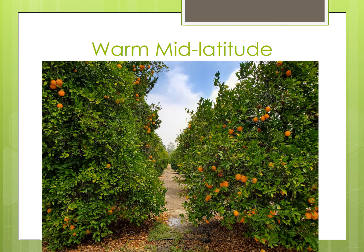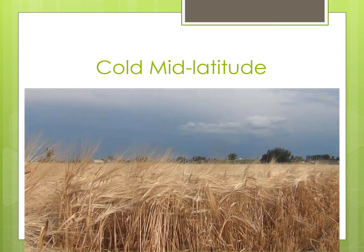Warm mid-latitude areas are similar to the subtropics because there are mild temperatures. These areas are known for fruits and vegetables, like the orange groves that you see here. Cold mid-latitudes are also in the mid-latitude range but are generally colder in temperature and perhaps have less abundant precipitation. You see wheat fields like the ones shown here in areas in the United States, but also in China, where there's a very similar climate.